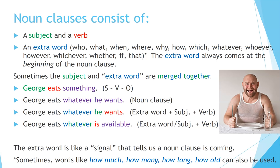Don't get these confused. Sometimes we use these words for questions — that's not what we're doing here. Sometimes the subject and extra word are merged together. For example, George eats something — something is the object. George eats whatever he wants. 'Whatever he wants' is a group of words that functions as the object of what George eats. This is called a noun clause. Now let's break it down into the three parts: 'whatever' is the extra word, 'he' is the subject, 'wants' is the verb.